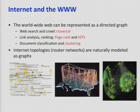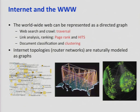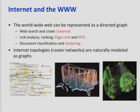The internet is a graph. Websites are vertices, and directed edges are the links from one website to another. Web search and crawling is a graph traversal. Ranking is PageRank or the HITS algorithm depending on what you want to use. And there's a lot of classification and clustering on the graph as well.